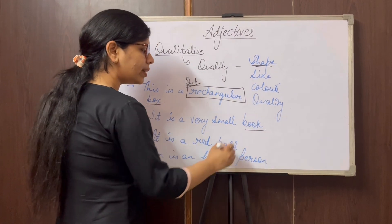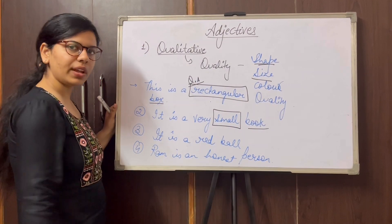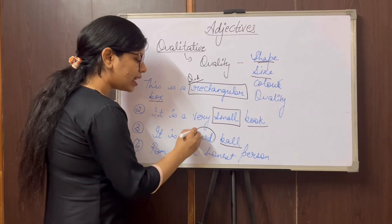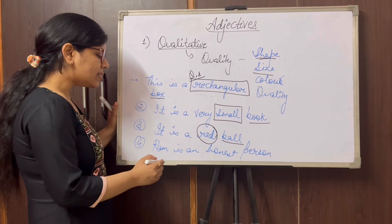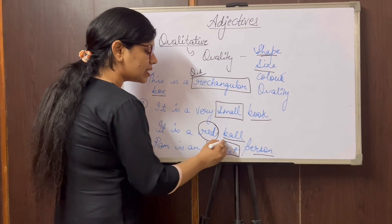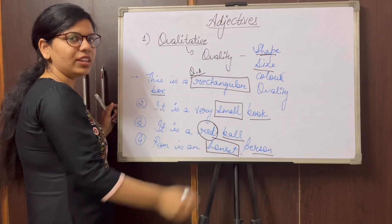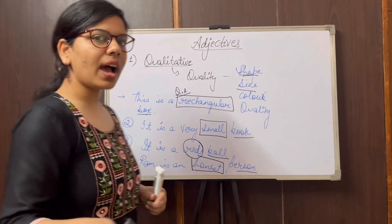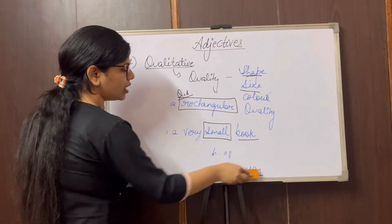Second sentence: 'It is a very small book' — what kind of book? Small. Again it becomes an example of qualitative adjective. Third: 'It is a red ball' — ball is the noun and 'red' is the adjective describing the color. Last: 'Ram is an honest person' — 'honest' describes his quality or attribute. Such words are known as qualitative adjectives.